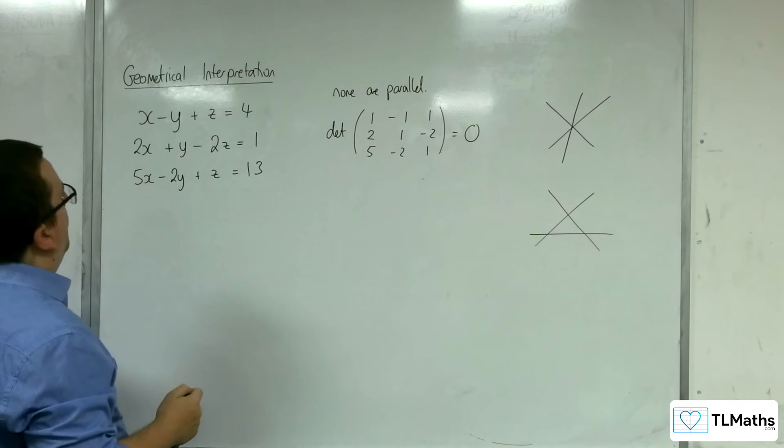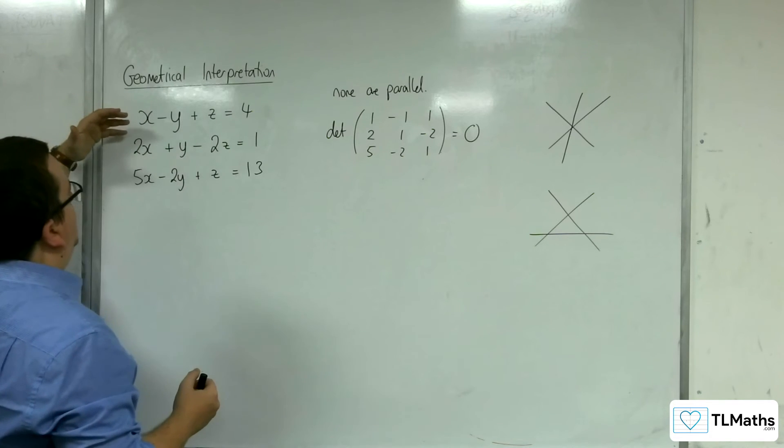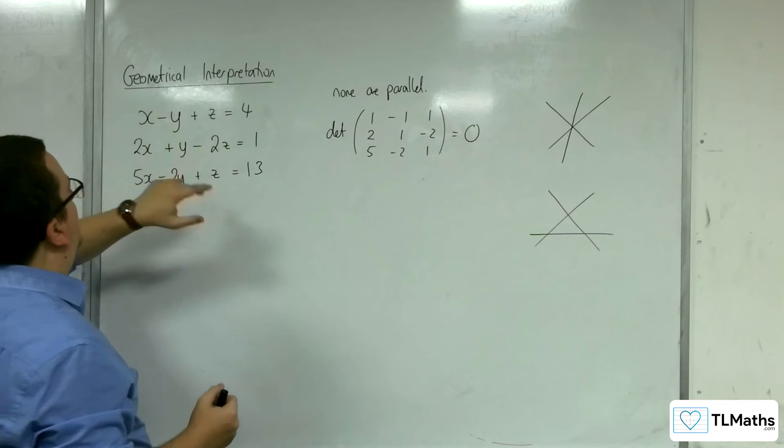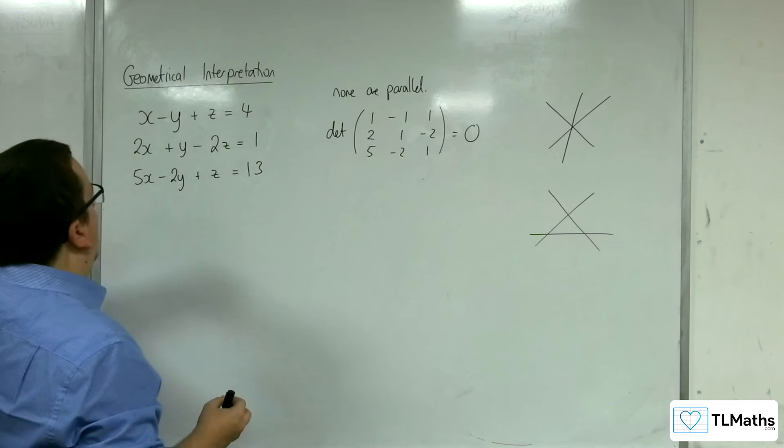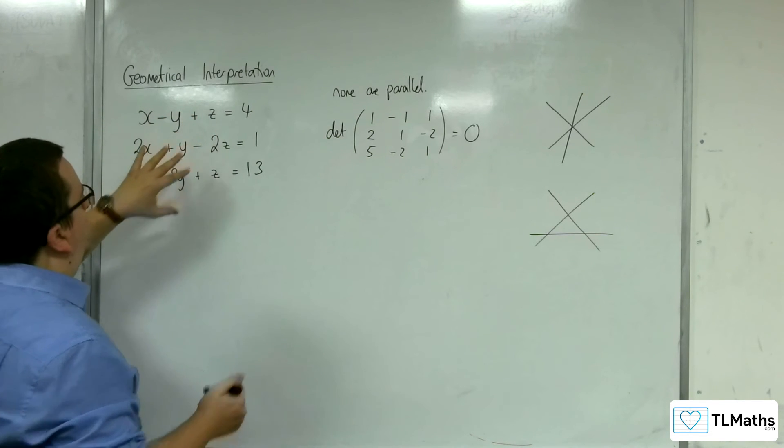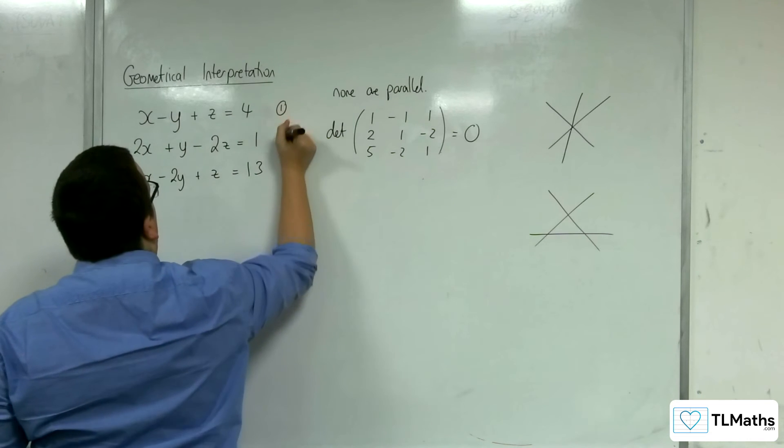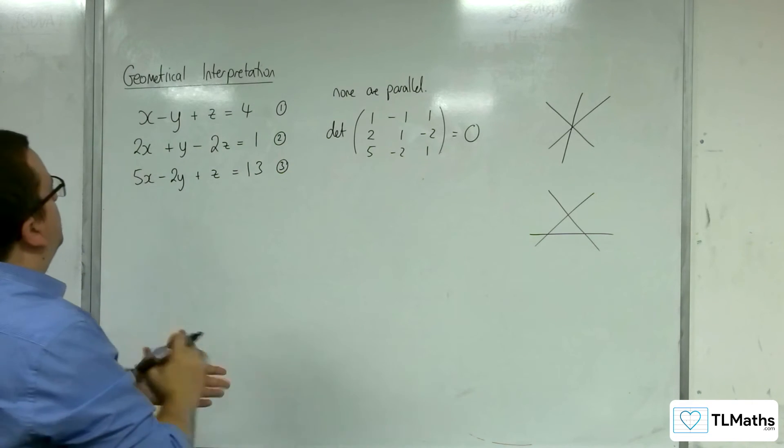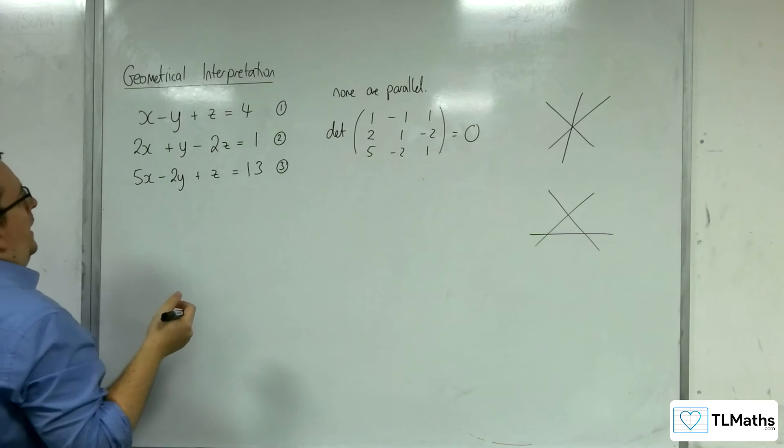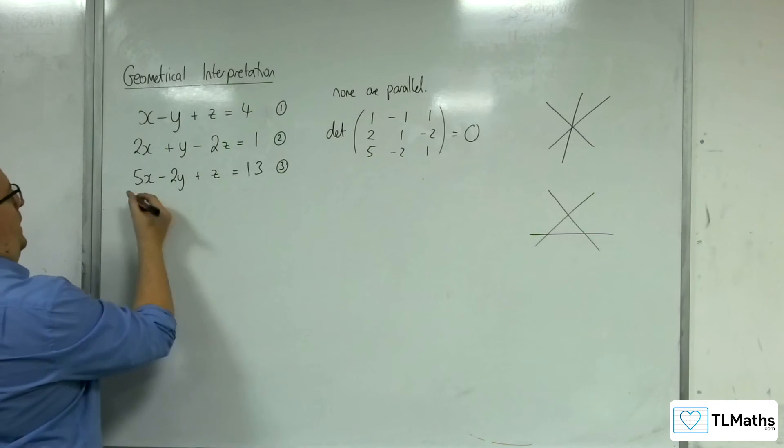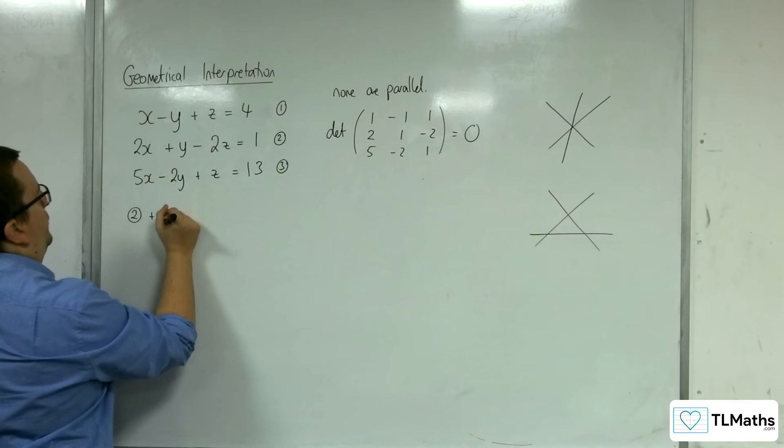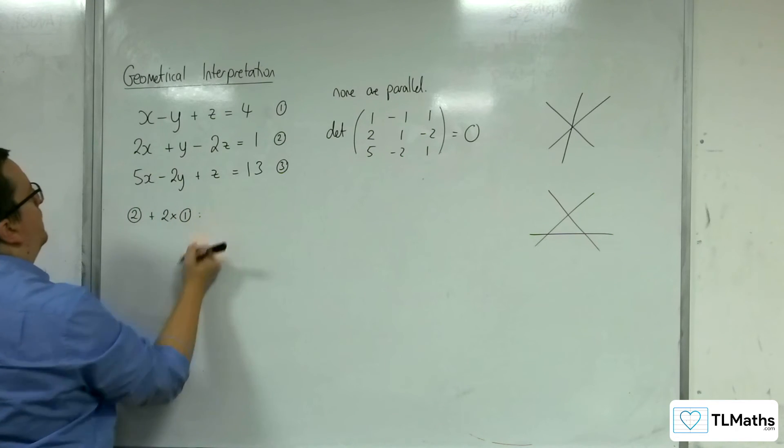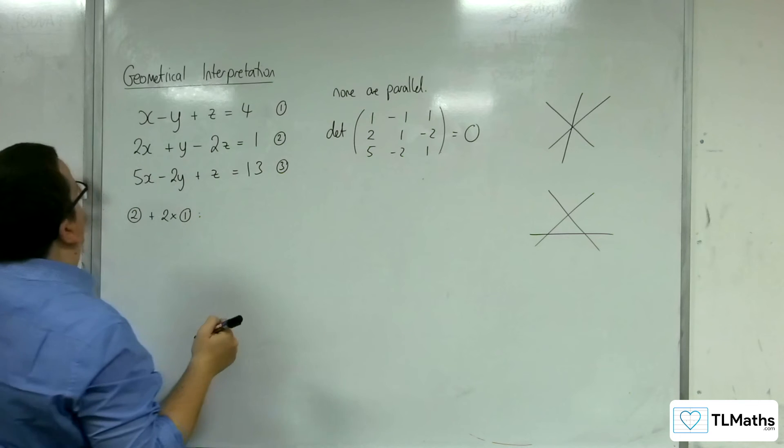So what I'd probably want to do is to eliminate. Let's go with the z's. Eliminate the z's from two sets of equations. So let's go with equation one, two, and equation three. So let's number them. And what we'll do is we'll have equation two plus two lots of equation one. Now knock out these z's.